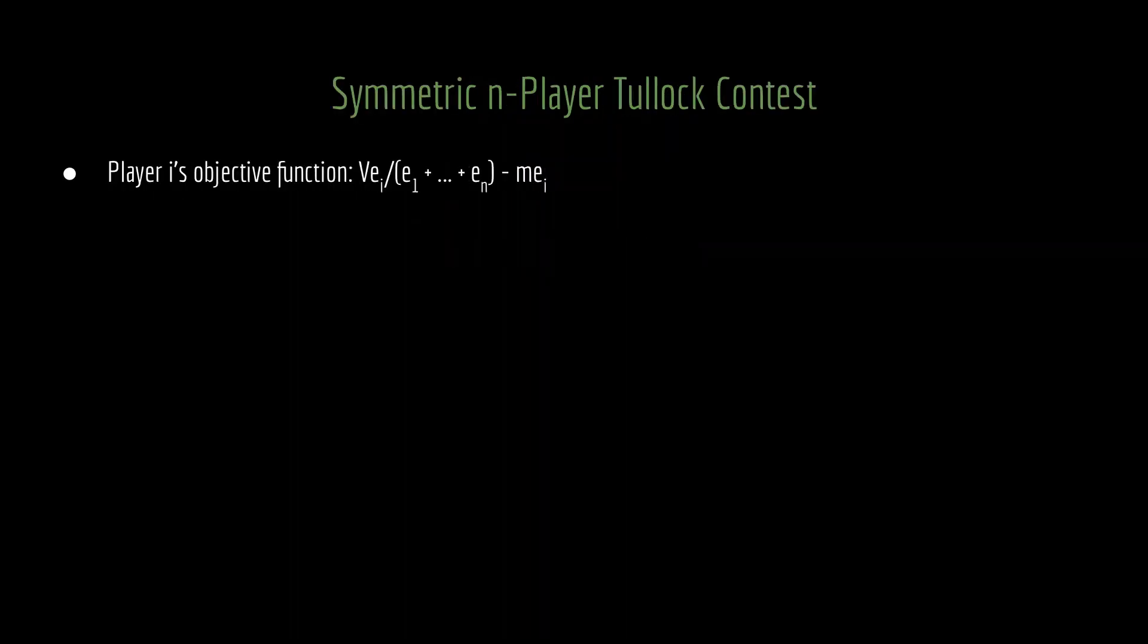We're going to solve this in two ways. First, we're going to examine a symmetric n-player Tullock contest. So in a symmetric game here, we're going to think about each of the players having identical marginal costs. Given that, player i's objective function is the value of the good v times the portion of the good it's expecting to receive, so we have the contest success function there, e_i divided by the total amount of effort, minus its cost of engaging in this contest, which is the amount of effort it has exerted times its marginal cost.